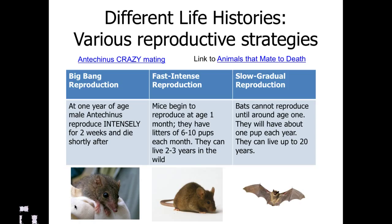One strategy, as seen on the left in the table, is big bang reproduction. An example is the antechinus, that little marsupial rodent-looking critter. They can reproduce beginning at the age of one year. What the males will do is intensely mate — pretty much literally nothing other than mate in bouts lasting up to 12 hours. During this time, they don't eat, don't sleep, don't drink, and become so physically and physiologically exhausted that their hair starts to fall out, their organs begin to fail, and they die shortly after mating.